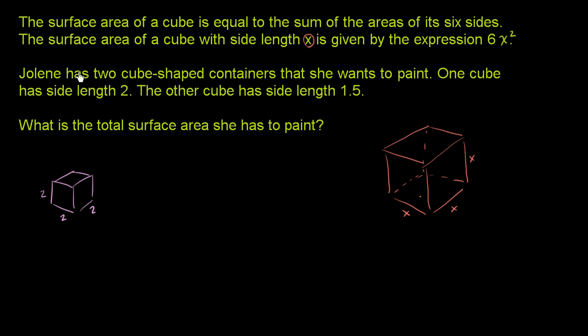The other cube has side length 1.5. So the other cube is going to be a little bit smaller. It has side length 1.5. So it's 1.5 by 1.5 by 1.5. What is the total surface area that she has to paint?